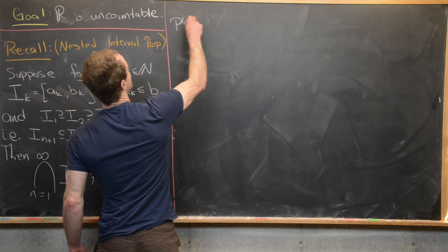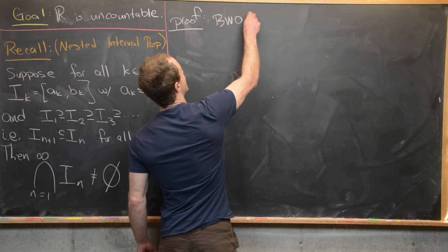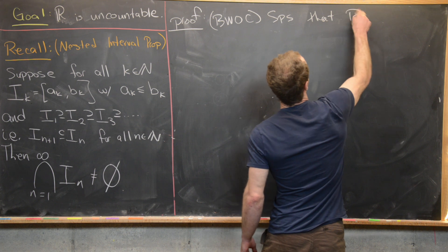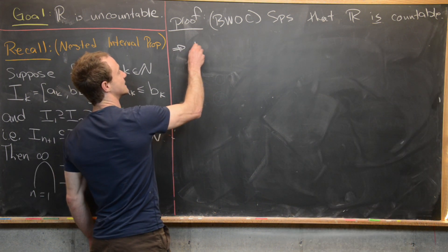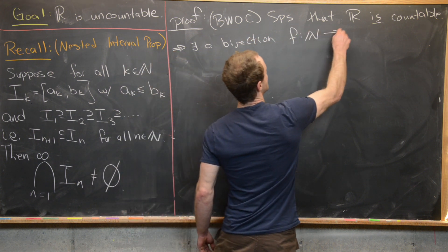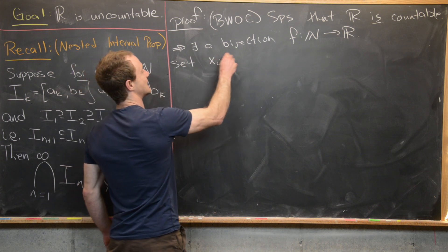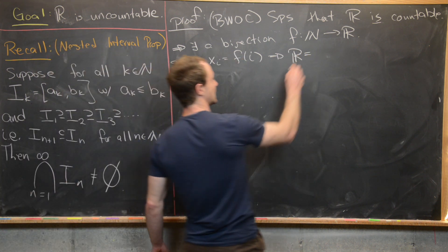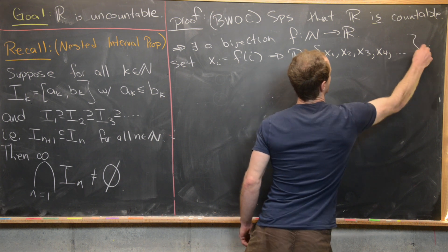Now let's look at the proof that the real numbers are uncountable. We're going to do this by way of contradiction. Suppose that R is countable. But this means there exists a bijection F which goes from N to R. We can set x_i equal to F of i, which gives us a nice way of listing the elements in R. So in other words, R equals {x_1, x_2, x_3, x_4, ...}, where each x_i is the image of i under this bijection.